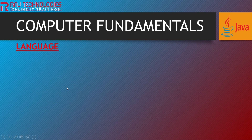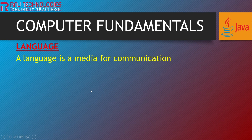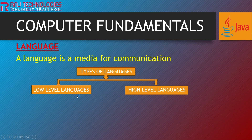The next one is language. The definition of language is: a language is a media for communication. Whenever you want to communicate, we make use of language. Related to human beings, we make use of languages like English, Hindi, Telugu, Tamil, Punjabi, or Marathi for communication. Related to computers, in order to interact with the computer, we need to make use of a language. And related to computers, we have two types of languages: low-level languages and high-level languages.